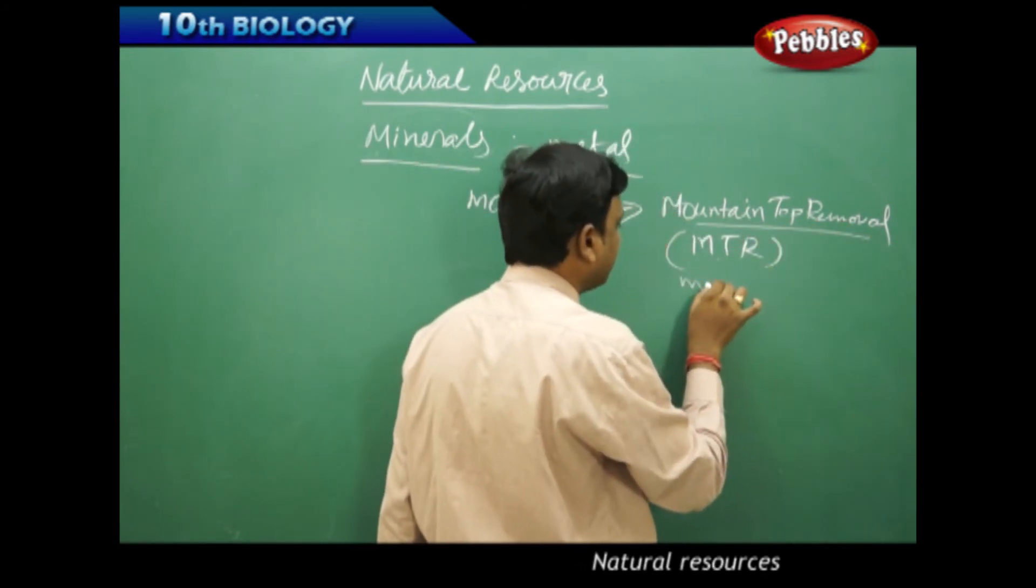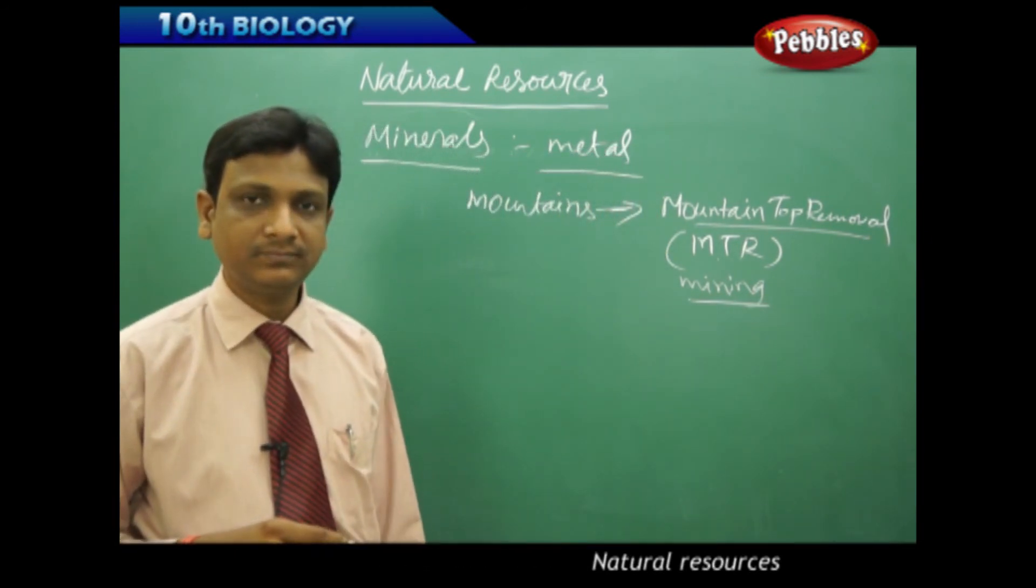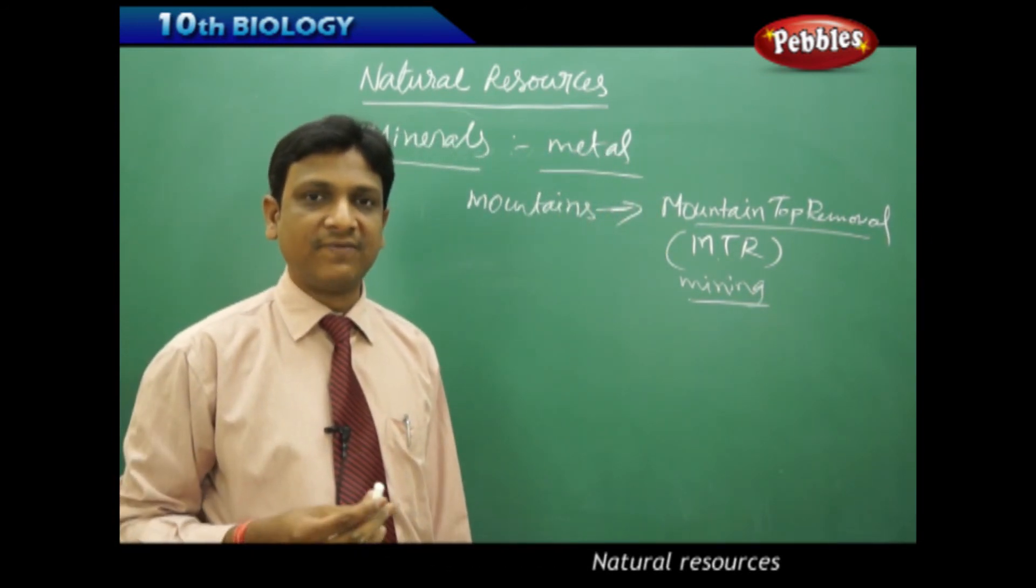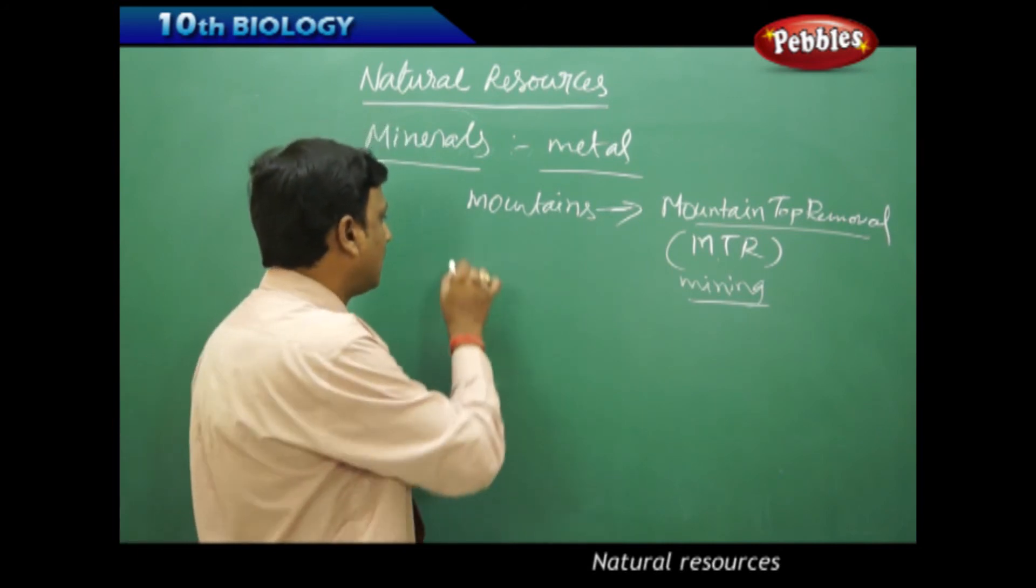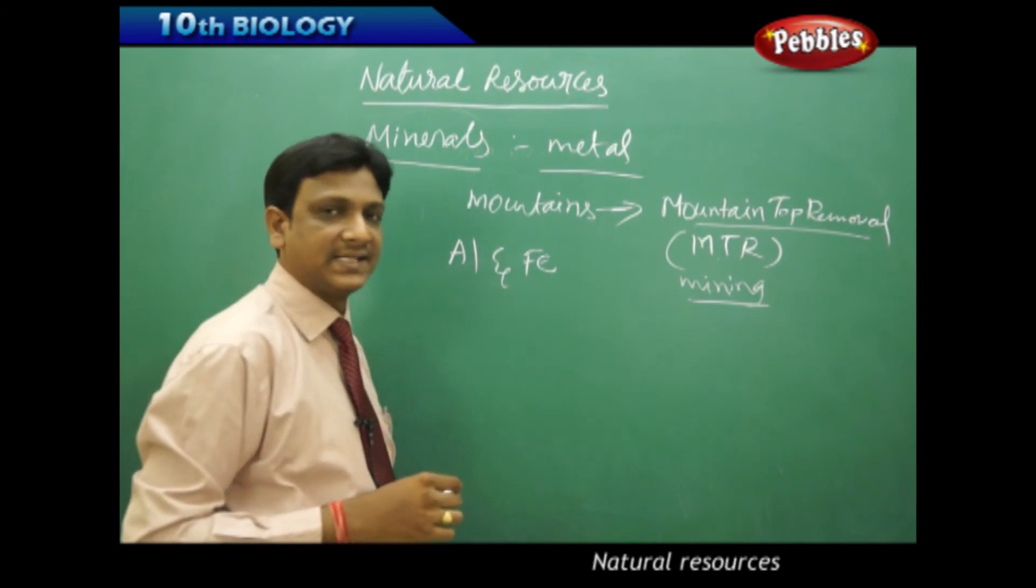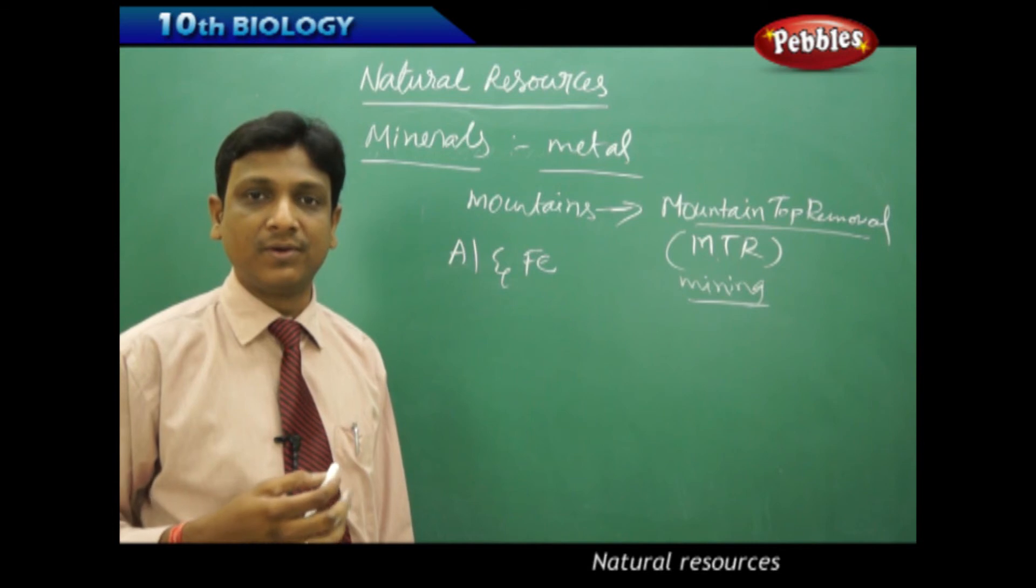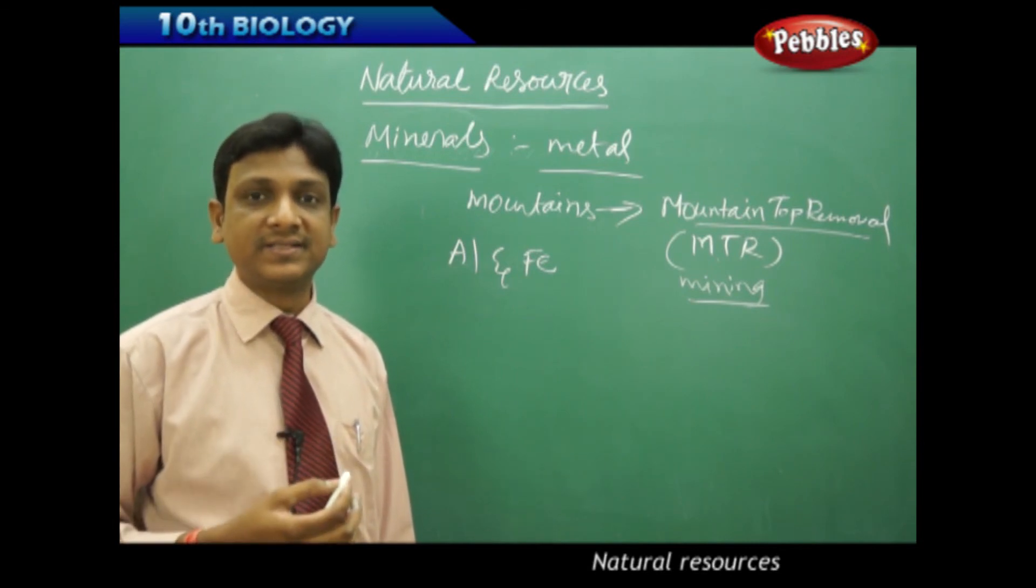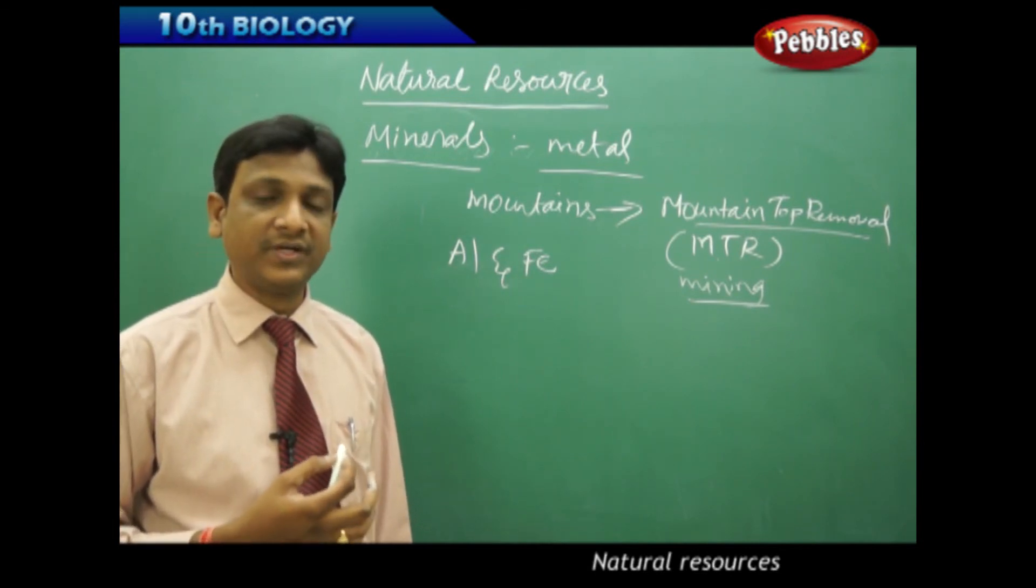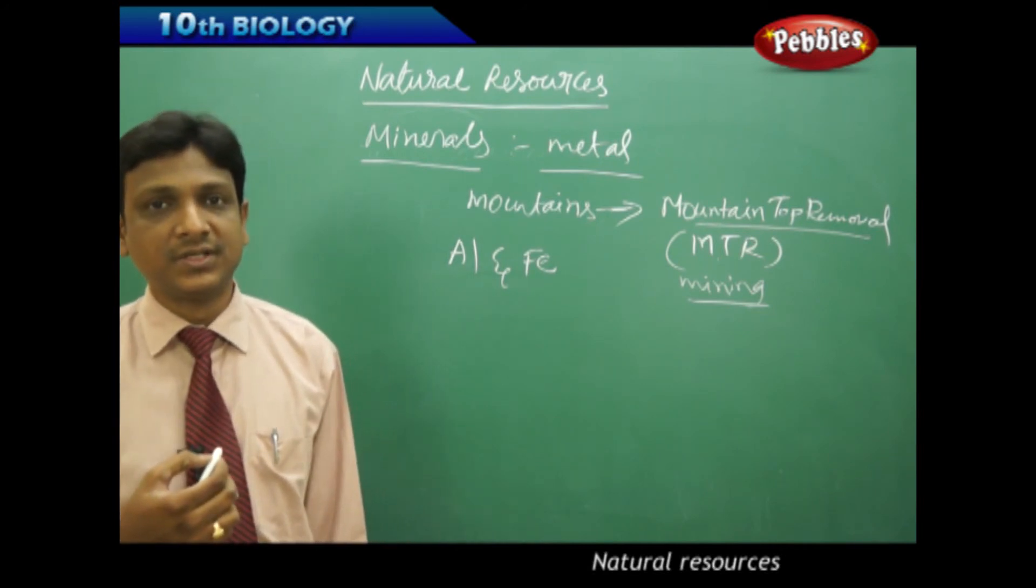So these mining activities, they pollute the environment a lot. At the same time, finding the metals like aluminum and iron are becoming very scarce. So the prices are going up for aluminum and iron, the prices are going up day by day because their availability is getting less. Because of that they are using very different methods of mining which are very dangerous to the environment.